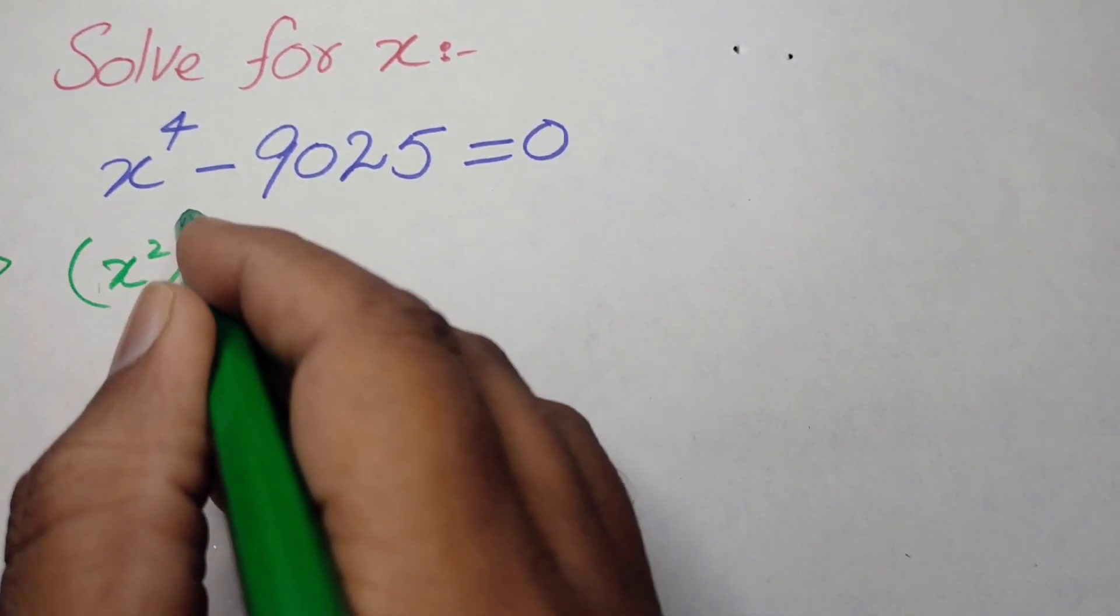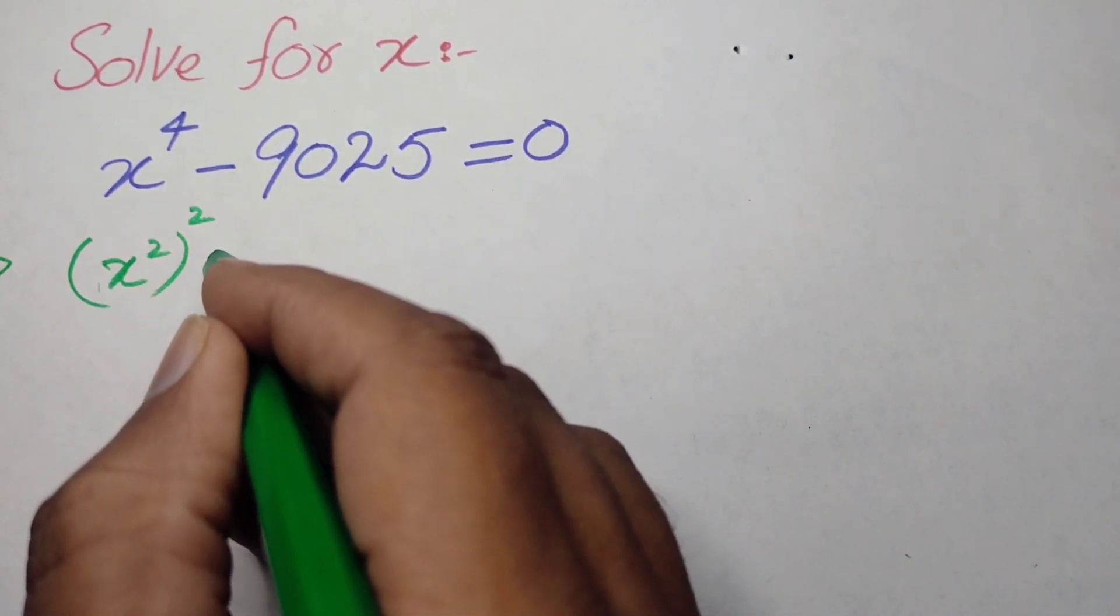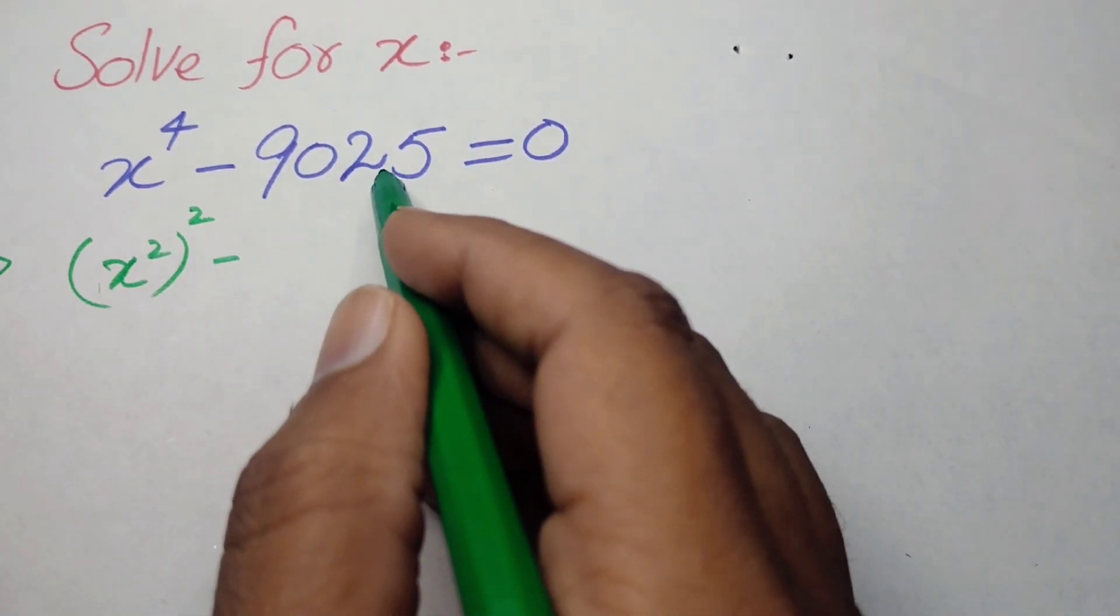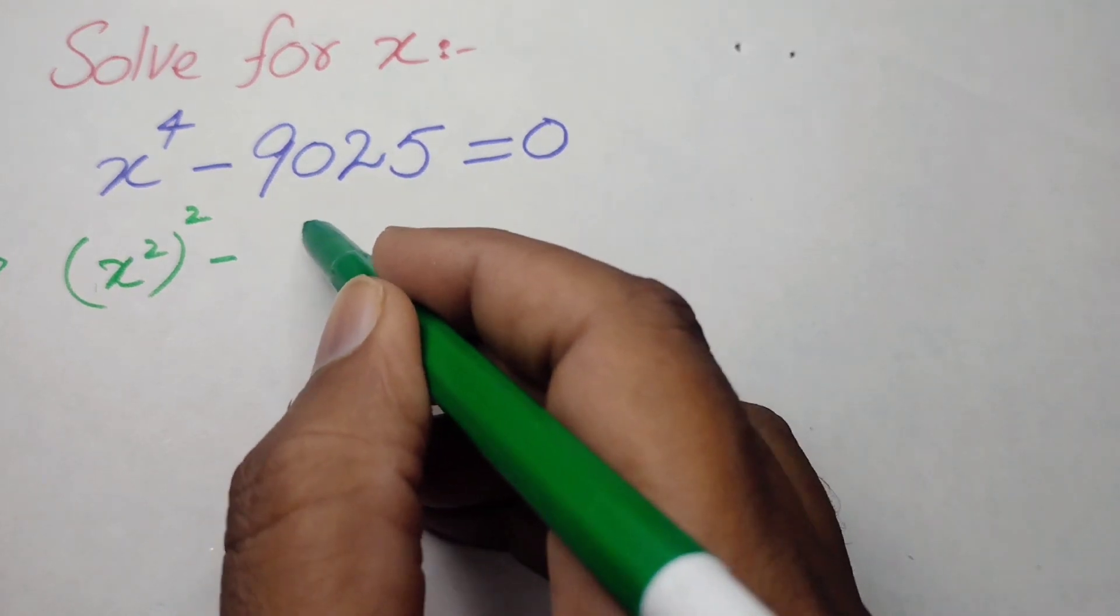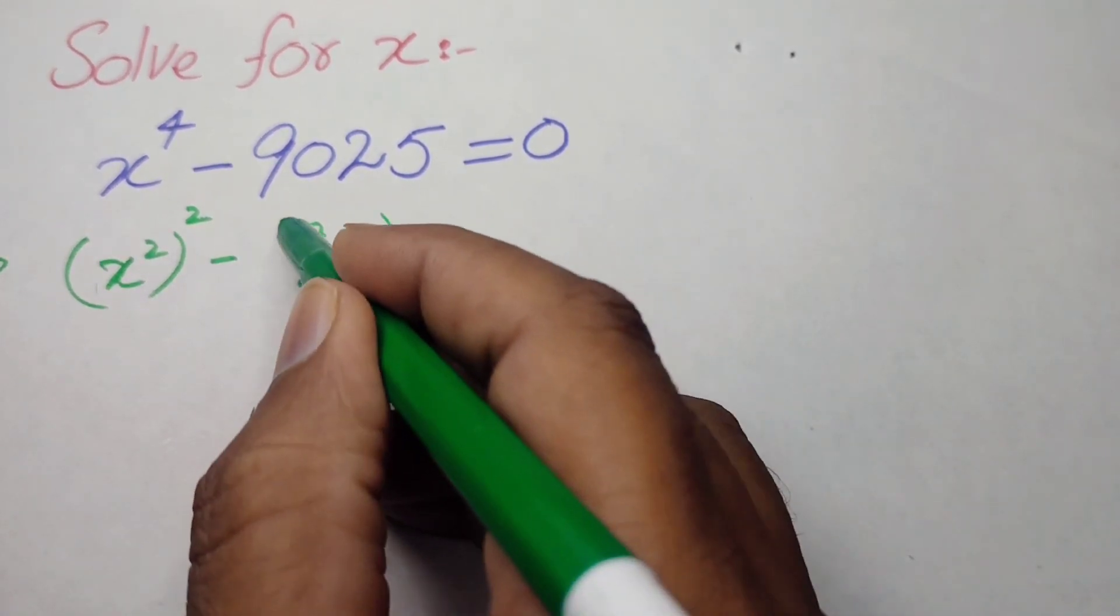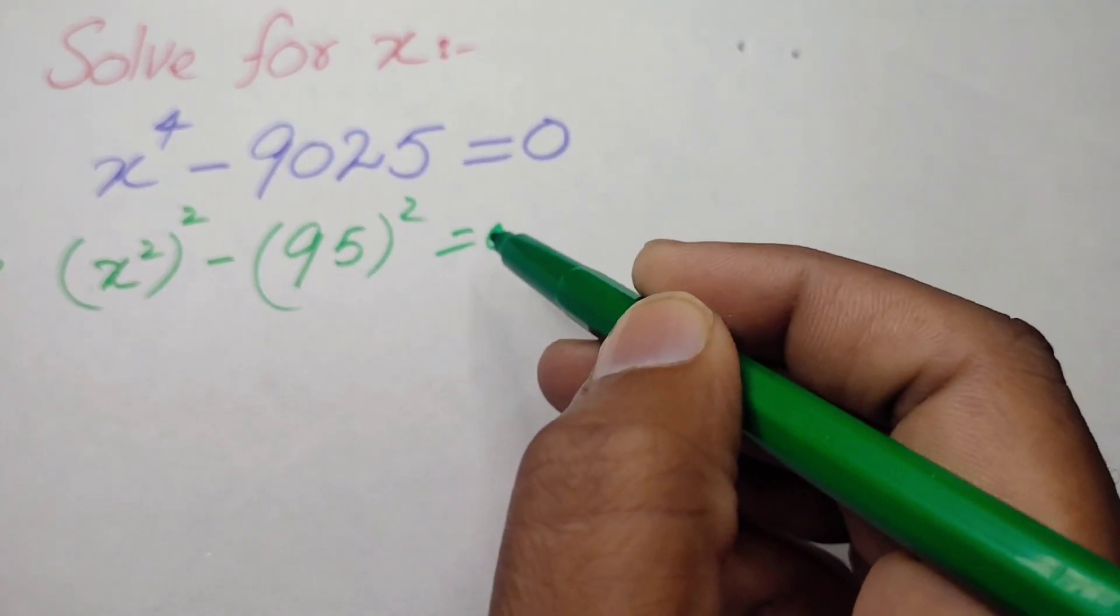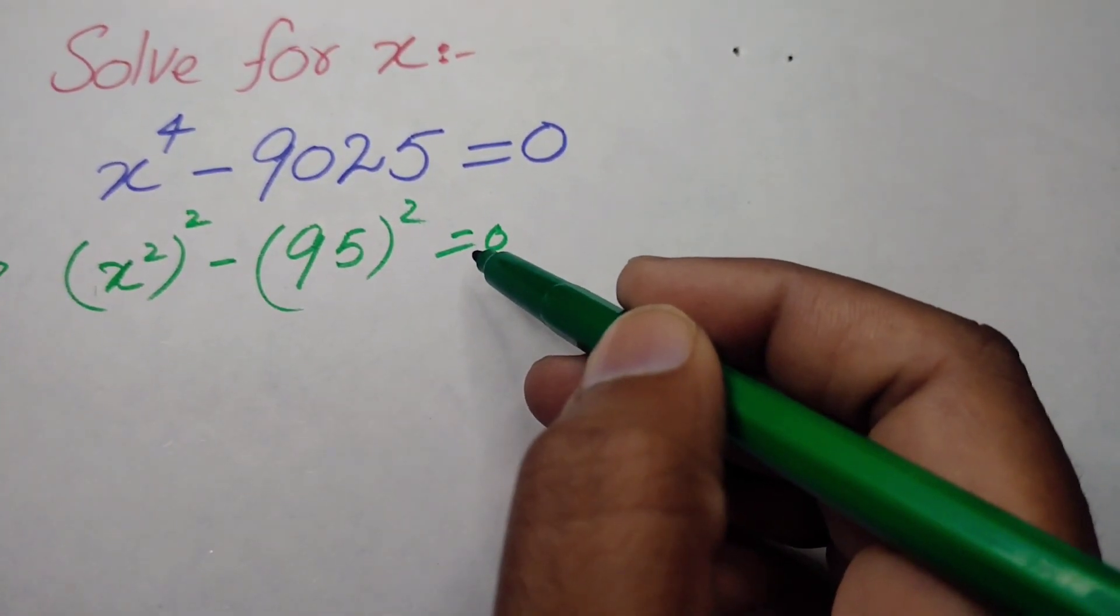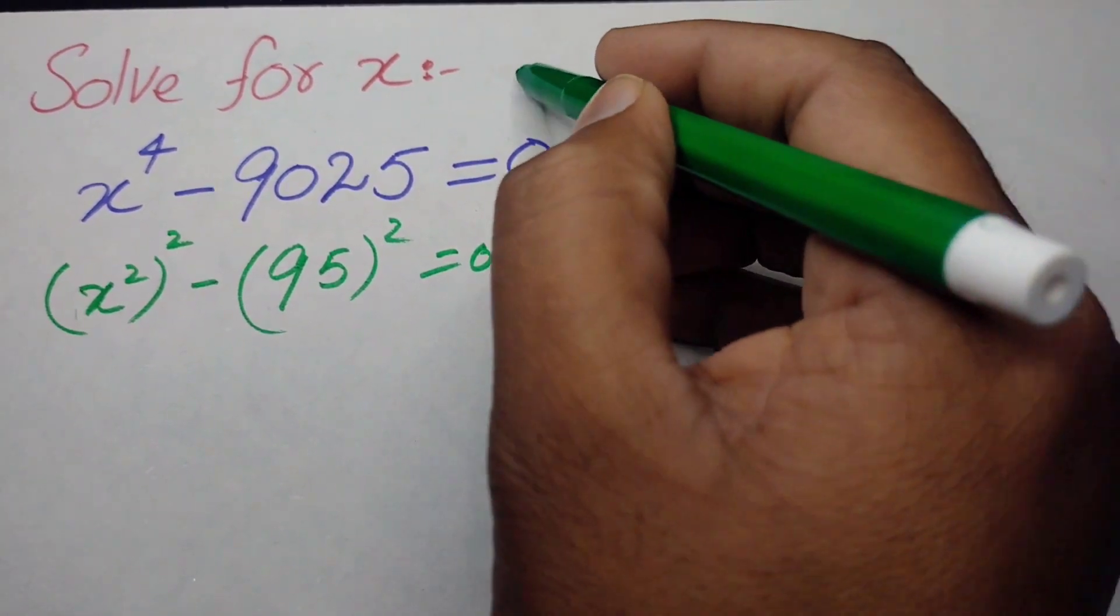So here we will write x to the power of 4 as x squared to the power of 2 minus we will write 9025 as 95 squared is equal to 0. After that we will apply the well-known identity.